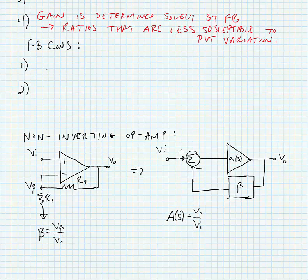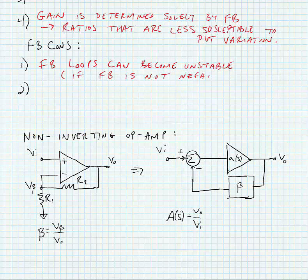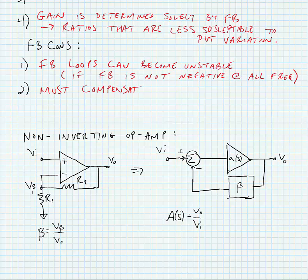The cons, of course, are that feedback loops can become unstable. This occurs if the feedback is not negative at all frequencies. We must compensate to ensure stability, and this is a drawback because our compensation can require a lot of circuit area and be complex.